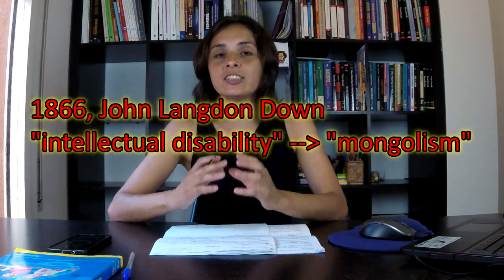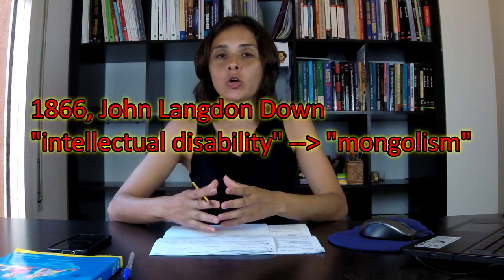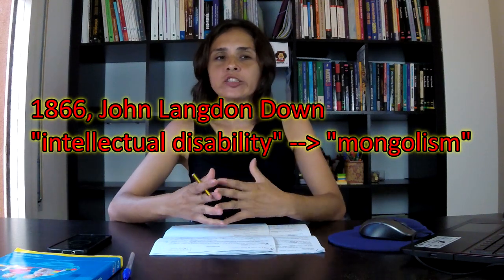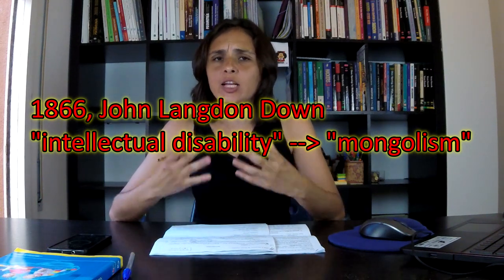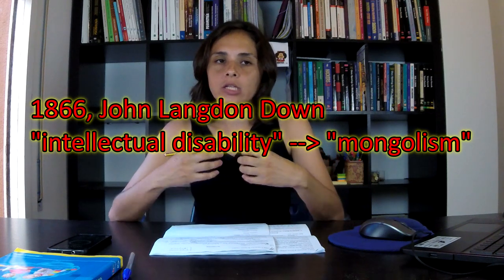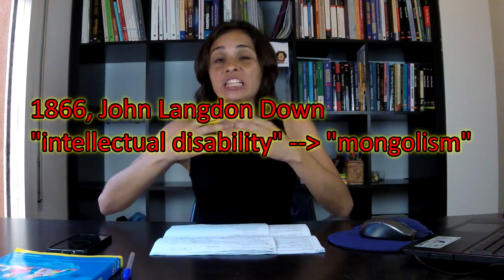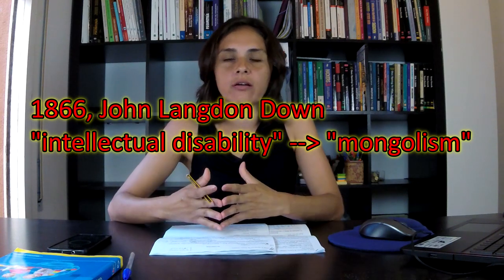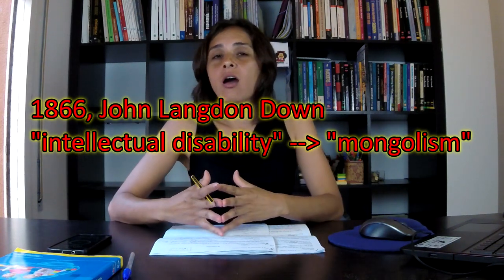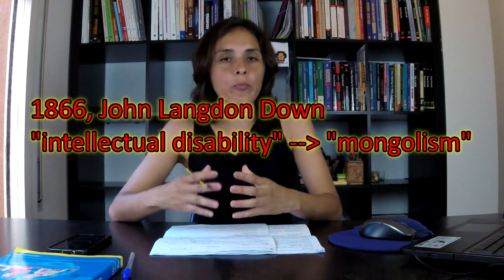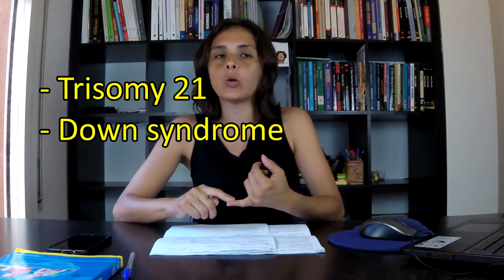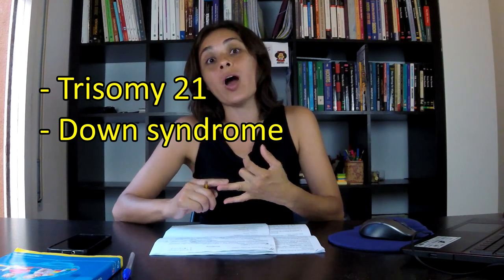Let me start with a bit of history. In 1866, the English doctor John Landon Downe described a type of intellectual disability which he called Mongolism. Later, these expressions were considered inappropriate and some alternatives were proposed such as Trisomy 21 or Down syndrome as we know it today.